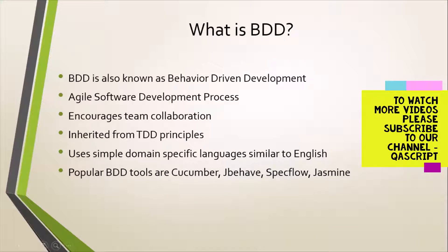Beginning with what is BDD. So BDD is also known as behavior-driven development. It is widely popular as a very popular agile software development process. It has got a set of principles through which it can set a process which a team can follow, and they can achieve better quality and better agility during the complete software development process. Now, the most important part of BDD is it encourages team collaboration. How does it do that?